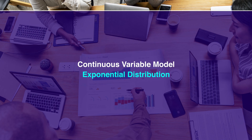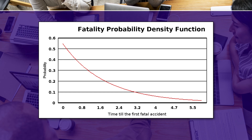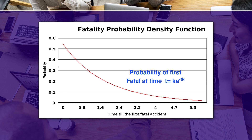For the continuous variable model, if we plot the exponential distribution with x-axis as time to the first fatal accident and y-axis as probability, the probability of the first fatal at time t is given by k·e^(−tk), and the figure starts from left to right in a downward direction. Thank you very much.